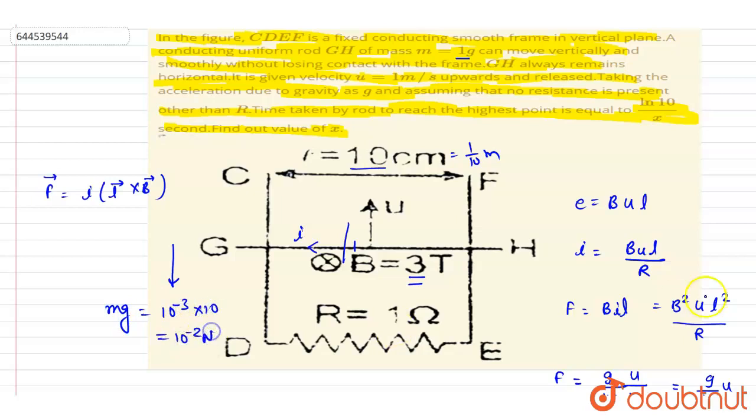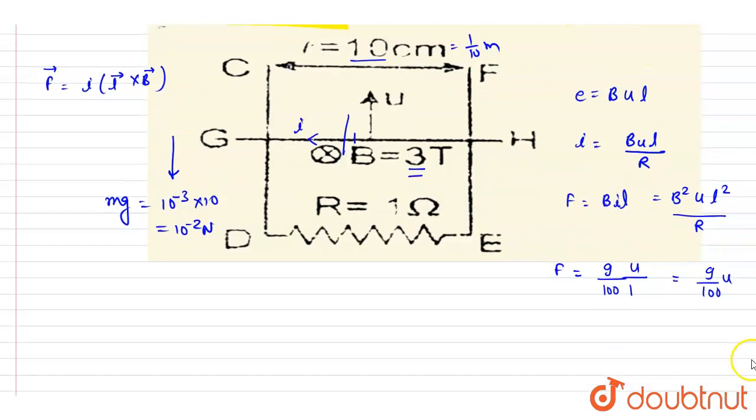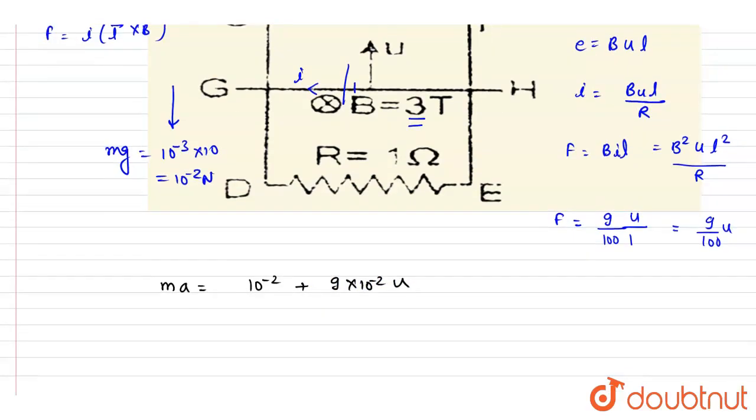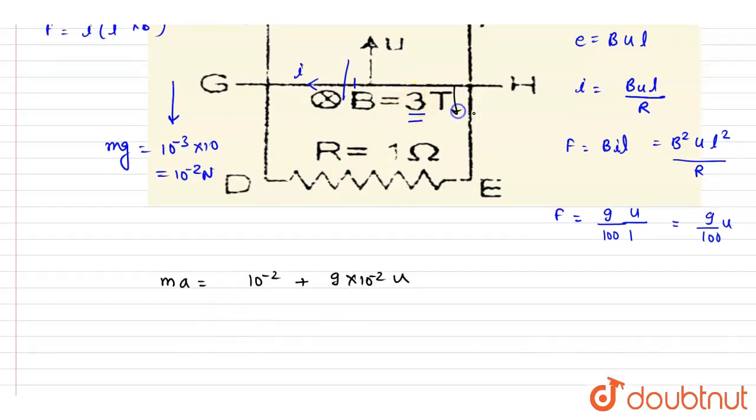All right, so if you see we have two forces acting in downward direction. So if I write down mass times acceleration, it will be equal to 10^-2 + 9/100 times u. These are the two forces. The acceleration will be in downward direction.